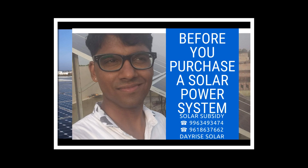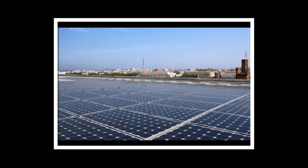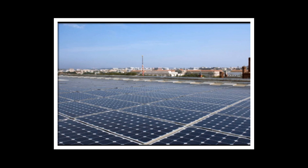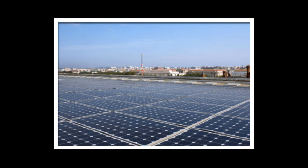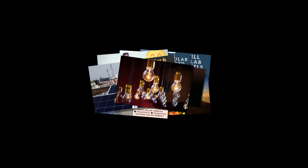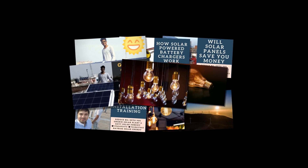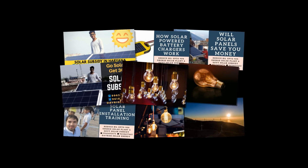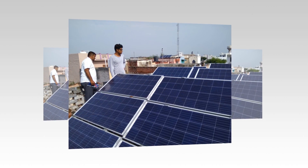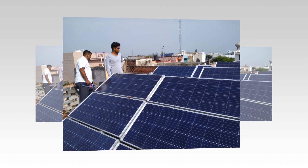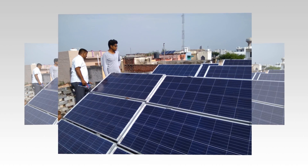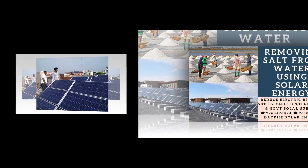Excess power, if any, is fed to the main grid of 220kV, 66kV, 33kV, 11kV 3-phase lines or a 440V/220V 3-phase or single-phase line, depending on the capacity of the system installed at residences, schools, colleges, institutions, commercial establishments or residential complexes.